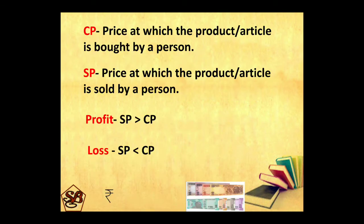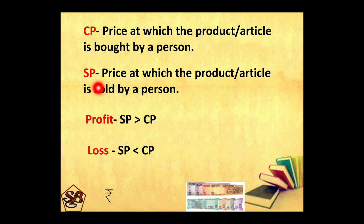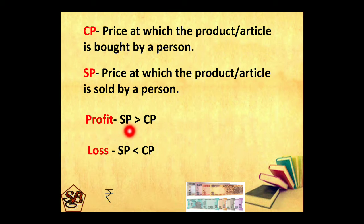Let's first revise what is a cost price. Price at which the product or article is bought by a person is the cost price. Price at which the product or article is sold by a person is the selling price. We have profit when selling price is greater than cost price. There is a loss when selling price is less than cost price.